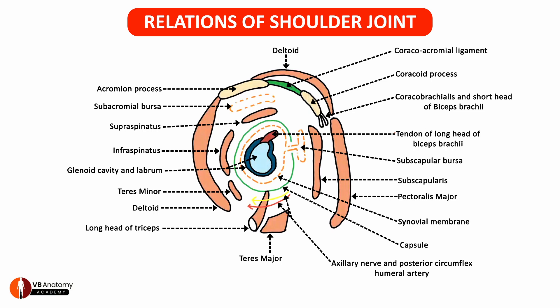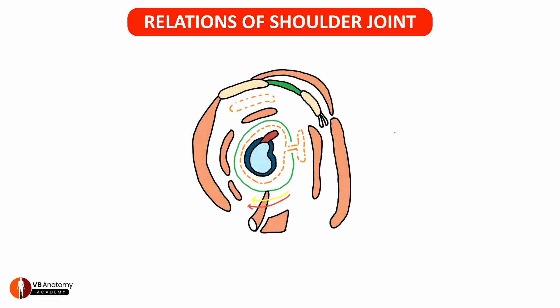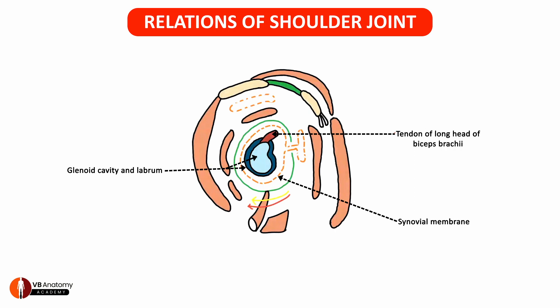This, my dear students, is a completed diagram of relations of the shoulder joint. Revise it once to help you understand the relations well, and you will be ready to answer any question on relations as well as actions of the shoulder joint. In this diagram you can see a centrally placed glenoid cavity surrounded by the glenoid labrum, which superiorly shows the attachment of the long head of biceps. All this is surrounded by a dotted layer of synovial membrane, a part of which emerges out to form the subscapular bursa.